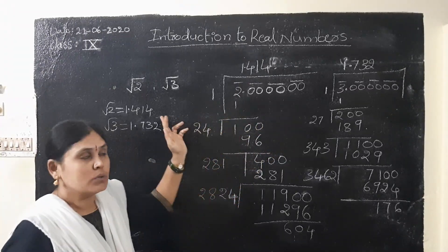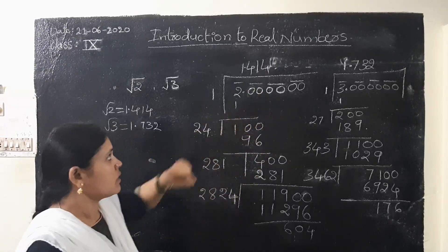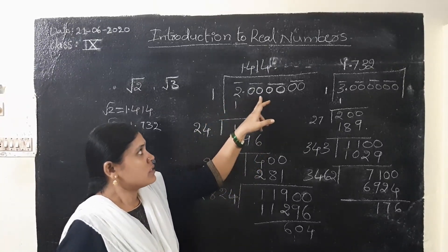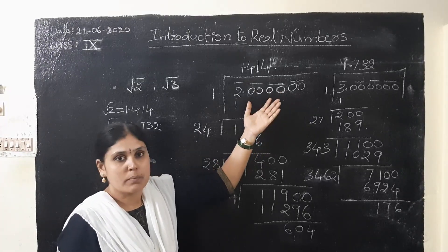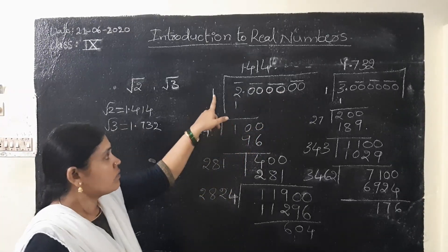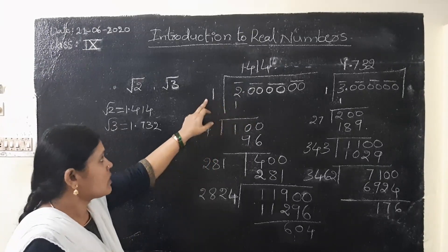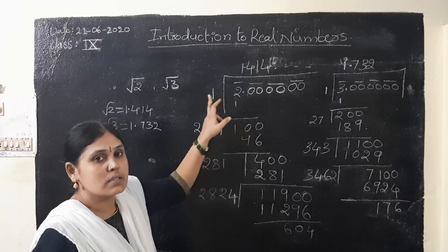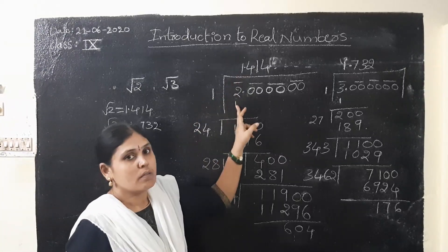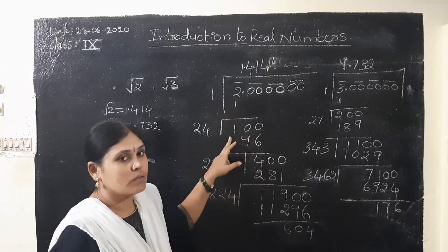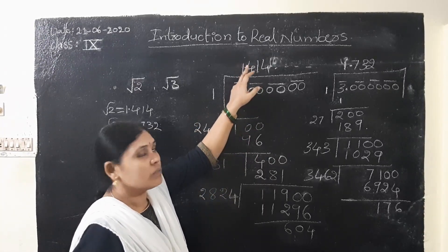How to do square root of 2 and square root of 3, how to get the values. Here, see: 2 means 2.000000 — like this we will write. Here, first start with 1, because 1 square is 1. The nearest square for 2 is 1 only. So 1 ones are 1. 2 minus 1 is 1. After that, here, what is the quotient? 1.